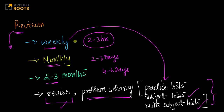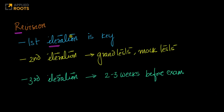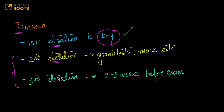This whole process is your first iteration of learning, where you go through each subject one after the other. The first iteration inherently has weekly, monthly, and quarterly revision built in — the first iteration is the key. If you do this well, the next iterations become very, very simple. In the second iteration, you go through and revise all subjects, revise all your notes, and then take grand tests and mock tests.